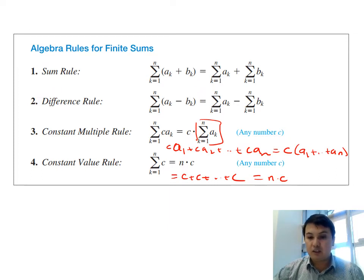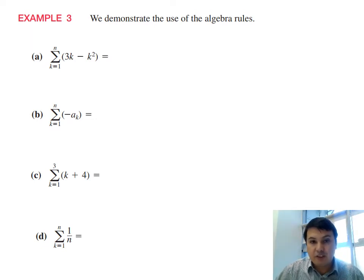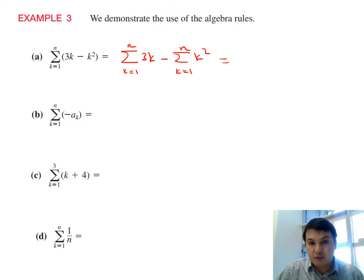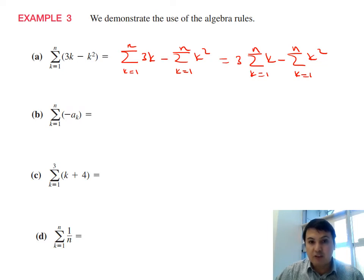Let's apply the rules. For the sum of (-3k - k²), we can split it as -3 times the sum of k minus the sum of k², both from 1 to n. For the sum of -a_k, we factor out -1 to get negative one times the sum of a_k from 1 to n. These properties simplify many calculations.